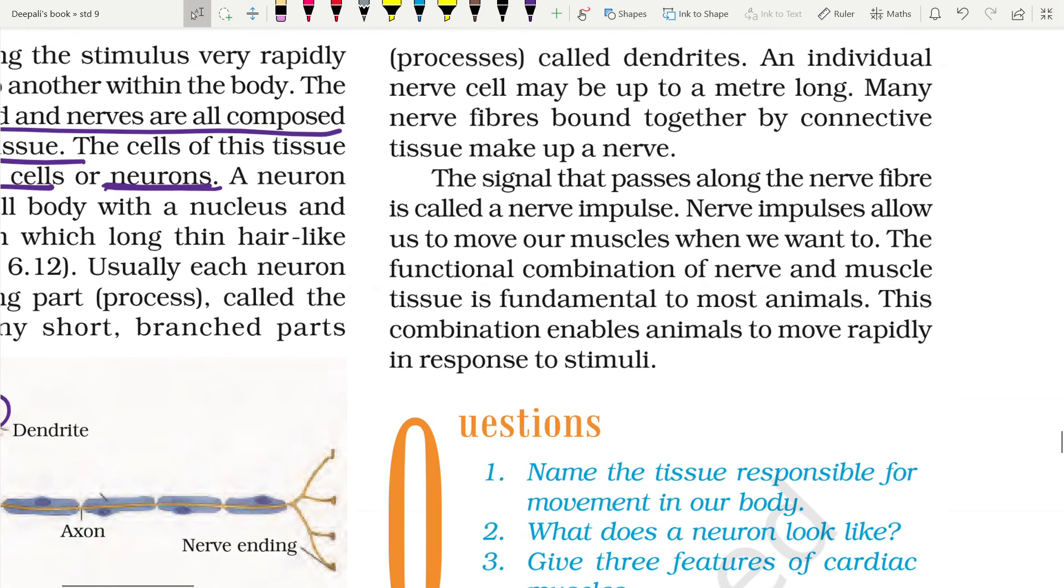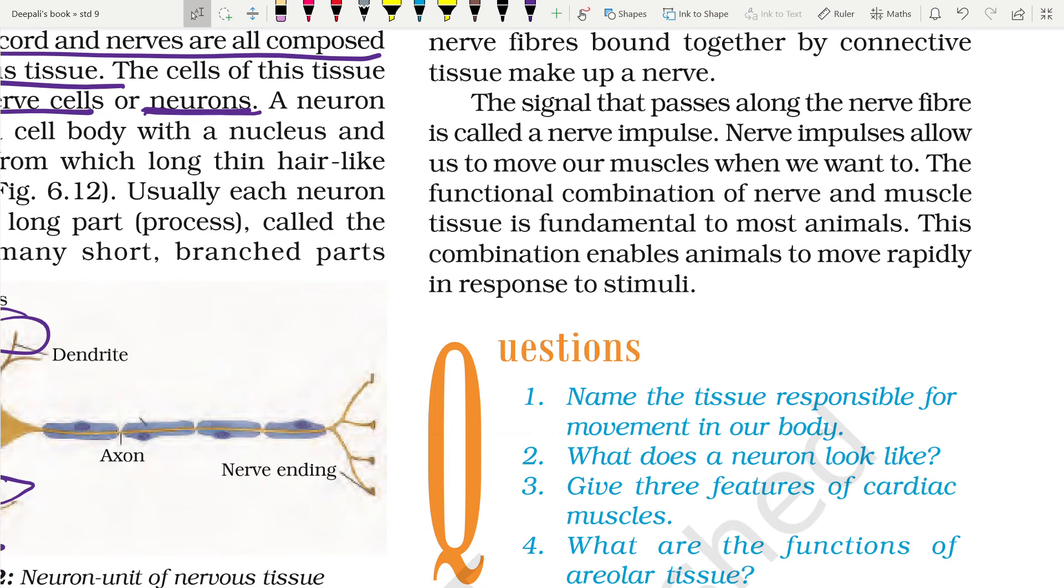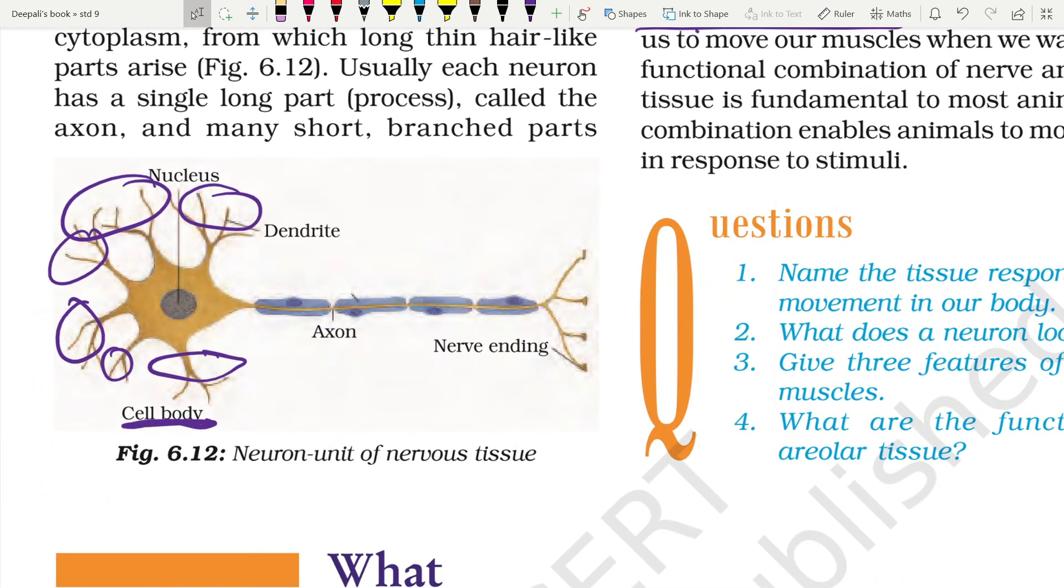And they have an individual nerve cell can be made up of a meter long. Many nerve fibers bound together by the connective tissue make the nerves. The signal passes along the nerve fiber and is called nerve impulse. Nerve impulse allows us to move our muscles when we want to. And the functional combination of nerves and muscle tissue is fundamental to most animals. This combination enables animals to move rapidly in response to stimuli.